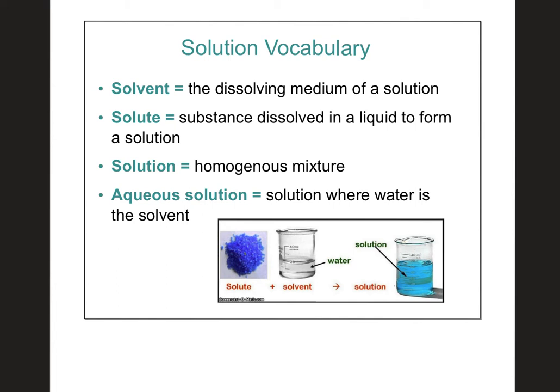Some vocab to write down. When we make a solution, we have a few different parts. The solvent is what we are doing the dissolving in — it's usually the liquid. For us, typically the solvent is going to be water. The solute is what we are putting in the liquid to try to get to dissolve — usually a solid powder — and mixing it makes what's called a solution.